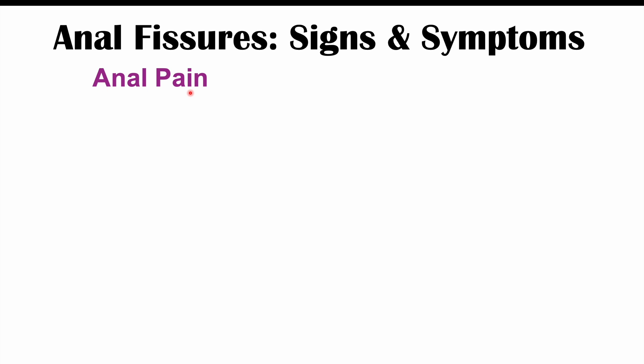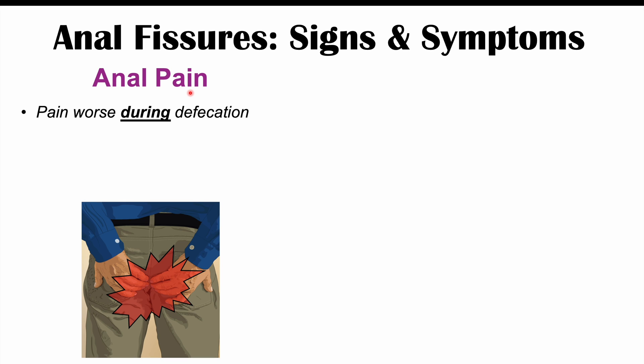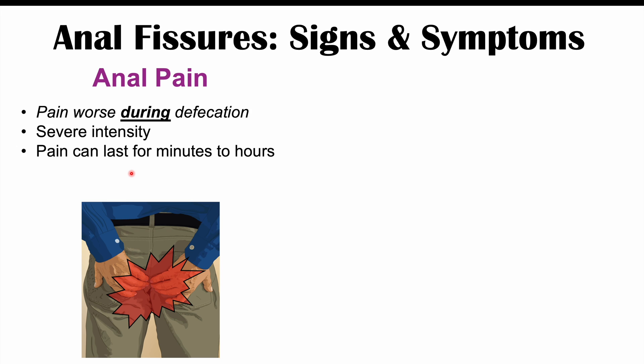The first sign and symptom of anal fissures is anal pain. This pain is worse during defecation — that is a key feature. The pain is often described as severe, and it can last for minutes to hours after defecation. Patients may experience worsening, very severe pain during and after a bowel movement, and the anal pain will recur with every bowel movement.